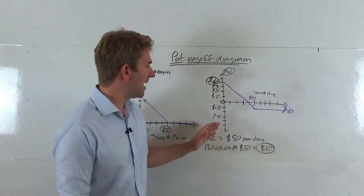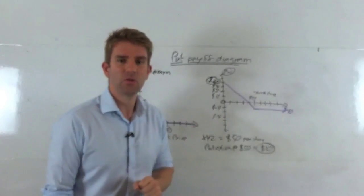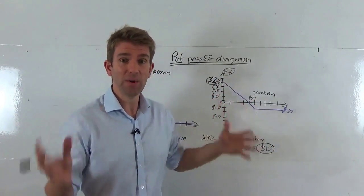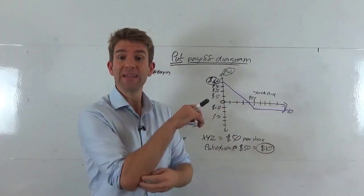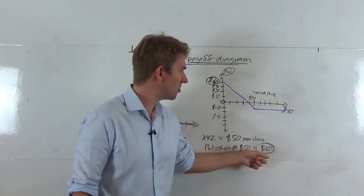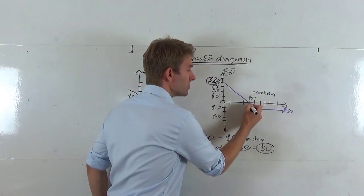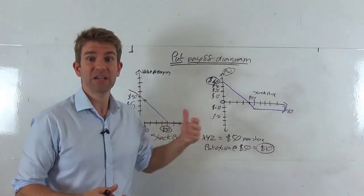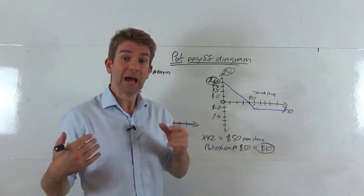Let's look at what happens if the stock price is at $40. We've got the right to sell stock at $50, and we're going to take up that right because it's currently trading at $40. The intrinsic value of the contract is $10, but we paid $10 for it — so that's our breakeven point. We'll exercise it and get $10 back, but since we paid $10, our P&L is zero.